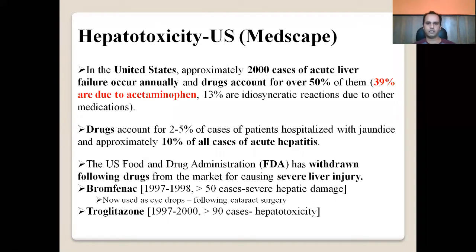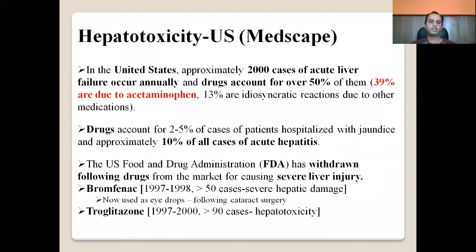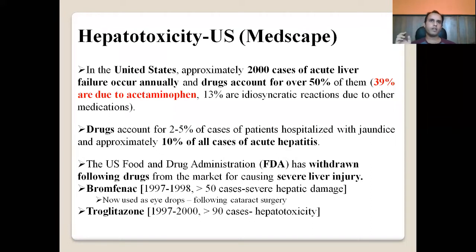Drugs account for 2 to 5 percent of hospitalized jaundice cases and approximately 10 percent of all acute hepatitis cases. The US FDA has withdrawn drugs from the market several times due to severe liver injury. Bromfenac, introduced in 1997–1998, had more than 50 cases of severe hepatic damage and was taken off the market, though it was later reintroduced as eye drops only following cataract surgery. Similarly, troglitazone was withdrawn due to more than 90 cases of severe hepatotoxicity.